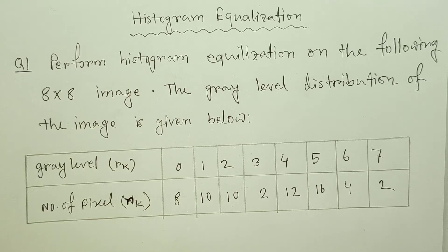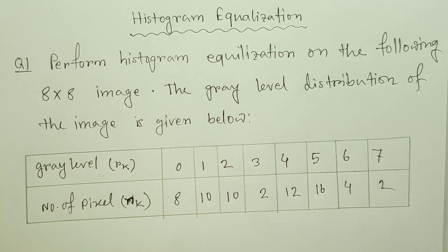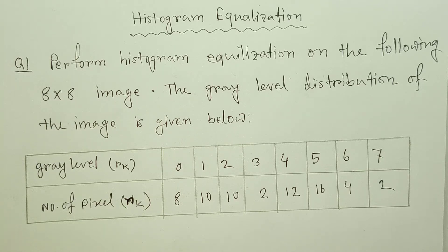How do we use Histogram Equalization? We use Histogram Equalization for Contrast Enhancing. Contrast Enhancing makes images color on screen clearer — now it's a dark type, and we use histogram equalization to correct it.